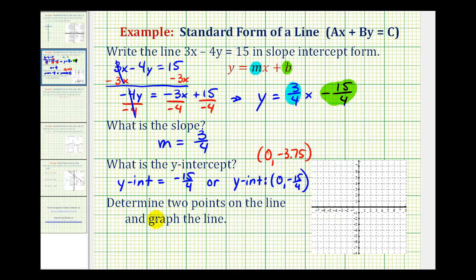So we could use the y-intercept as one of the points on the line. Let's go ahead and do that. We would have 0, negative 3.75. And let's go ahead and plot that point as well. It will be a little difficult to be exact, but it would be somewhere in here, just before negative 4 on the y-axis.